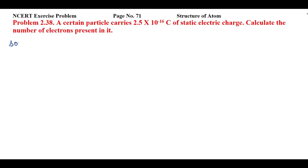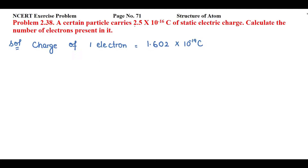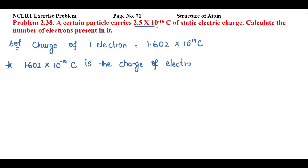To solve this, we'll apply the unitary method. First, we note that the charge of one electron is equal to 1.602 × 10⁻¹⁹ coulomb. We'll use the charge of one electron and the total charge of the particle to apply the unitary method. So, 1.602 × 10⁻¹⁹ coulomb is the charge of one electron.